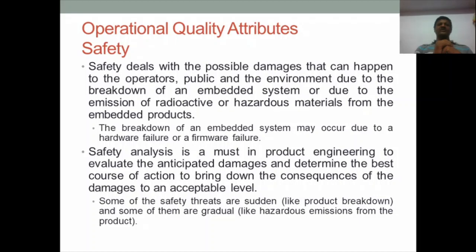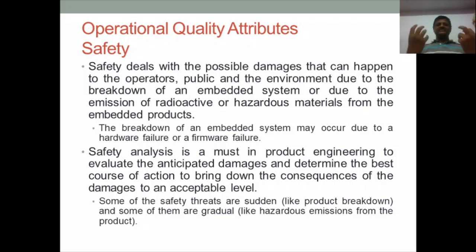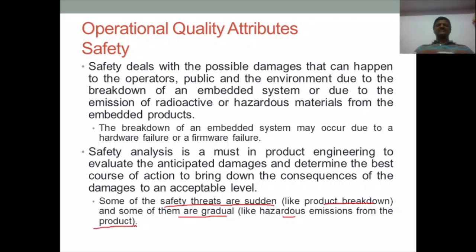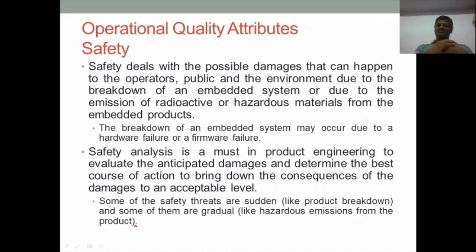Safety plays an important role in operational quality attributes. The system should not create any hazard to human beings or the environment — even if it accidentally breaks down, it should not damage the overall system. Minimum damage is acceptable. Safety threats can be sudden, like a product breakdown, or gradual, like hazardous emissions or smoke. The system should be able to immediately alert the user if something goes wrong, although sudden failures can still occur.